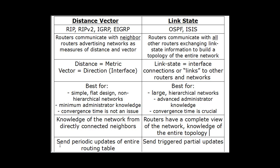Distance Vector routing protocols send periodic updates of the entire routing table. For instance, RIP sends out its entire routing table to its directly connected neighbors every 30 seconds. With Link State routing protocols, they send triggered updates and partial updates — only the information you need, and only when a network goes down. It's just the information about a particular network or link going down, sent on a triggered basis.